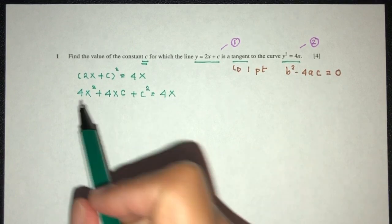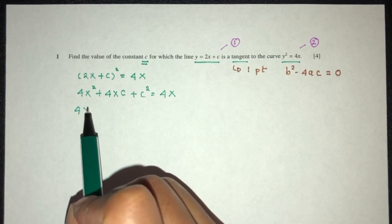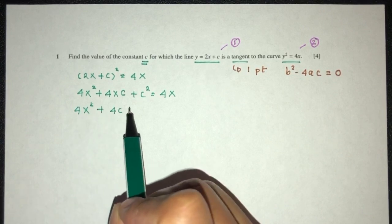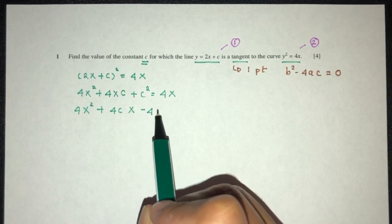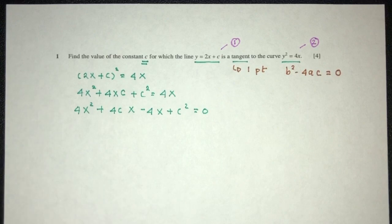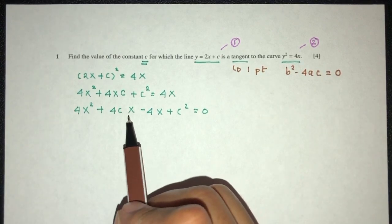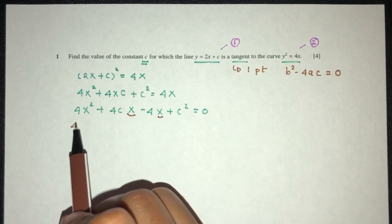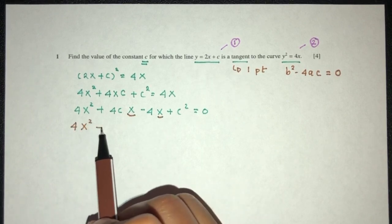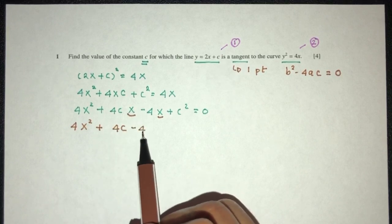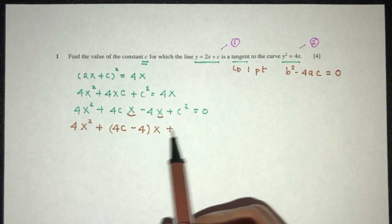Let's turn everything to one side. You will have 4x squared plus 4cx minus 4x and plus c squared. Now we can actually factorize the x outside. So you will have 4x squared plus 4c minus 4, and then x will be factorized outside.